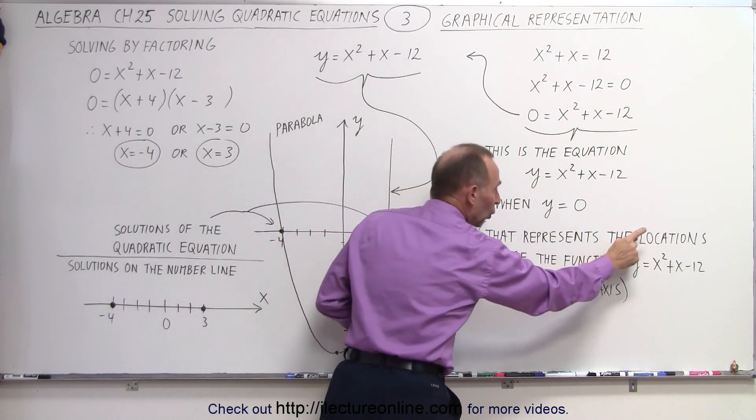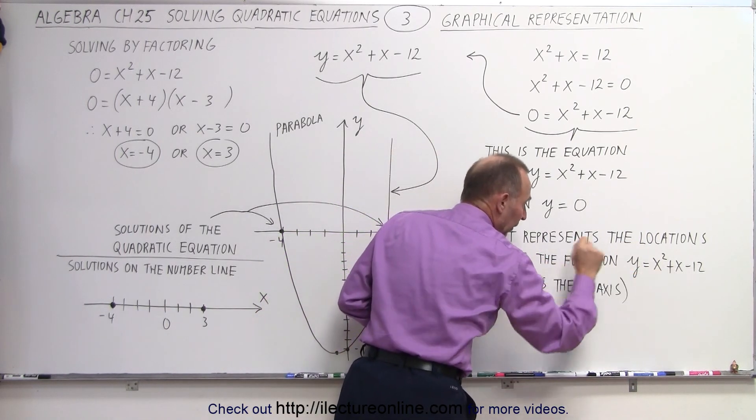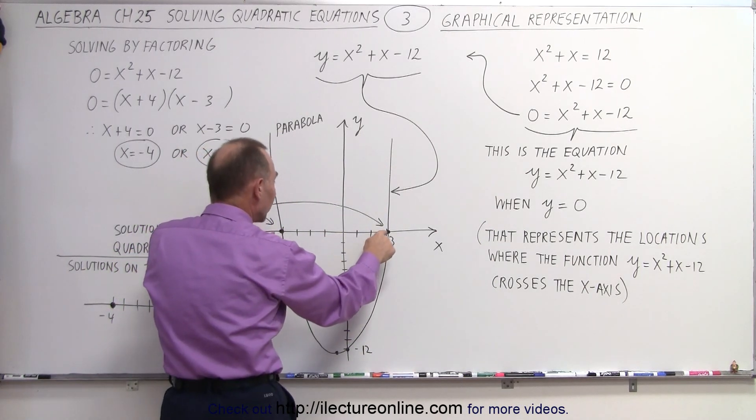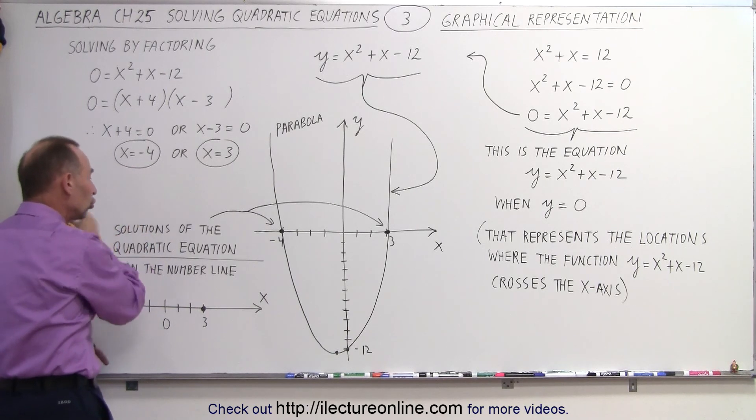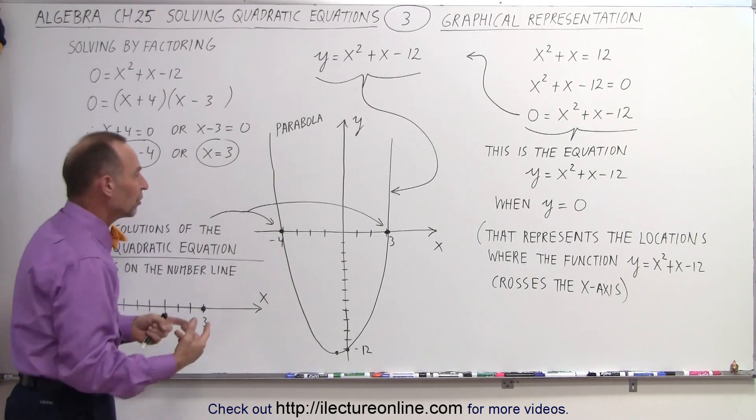that represents the locations where the function y equals x squared plus x minus 12 crosses the x-axis. And the points, the x values, where it crosses the x-axis, those are the solutions of the quadratic equation.